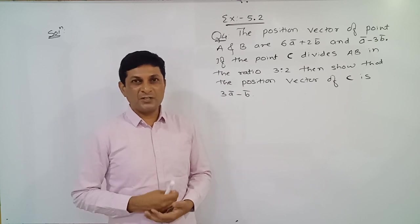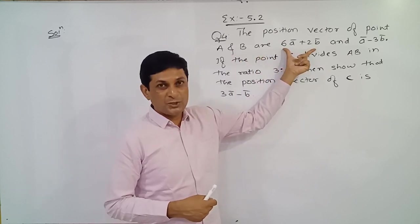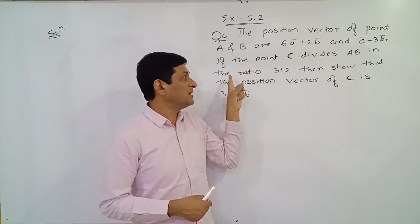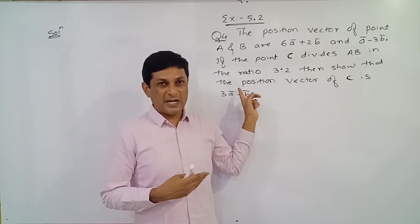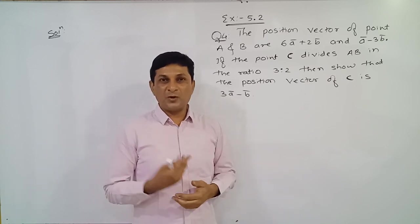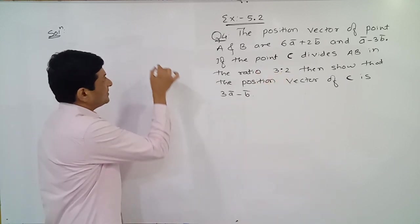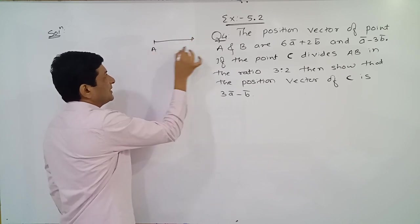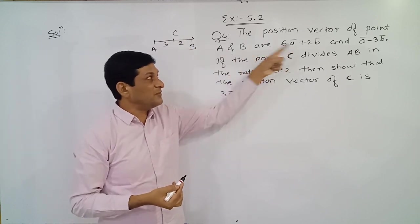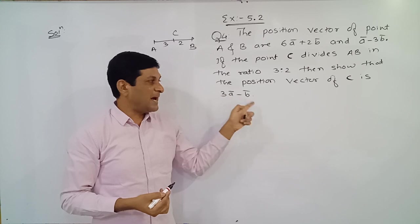In question number 4, the position vectors of points A and B are given to us. The question asks: if point C divides segment AB in the ratio 3:2, then show that the position vector of point C is given as 3Ā minus B̄. So we have to find the position vector of point C which divides segment AB in ratio 3:2, and prove that it equals 3Ā minus B̄.